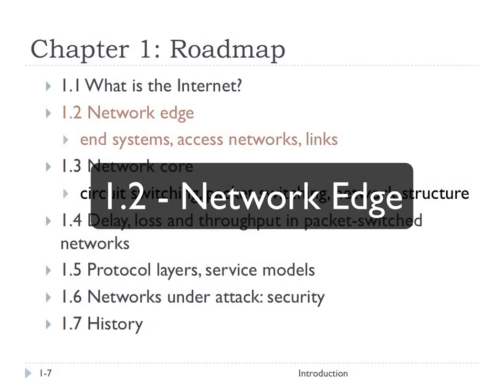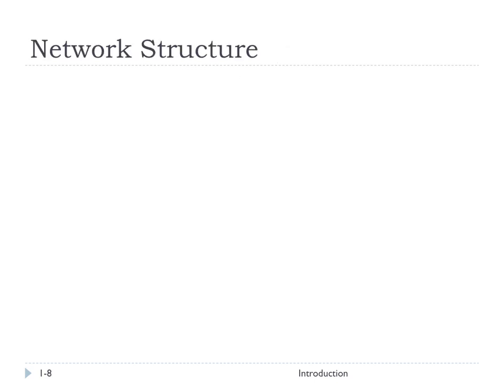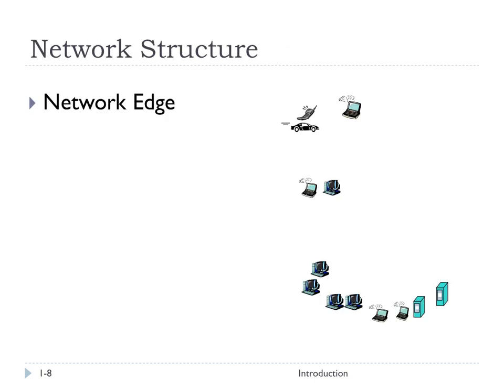This is section 1.2. We're going to talk about the network edge, in systems, access networks, and links. So we're talking about the network edge — the stuff that's on the outside of the network. These are probably the technologies you're most familiar with because they're the ones you've used the most.